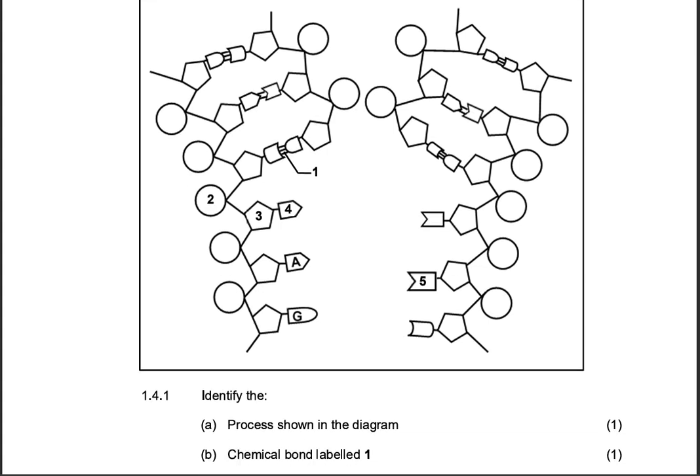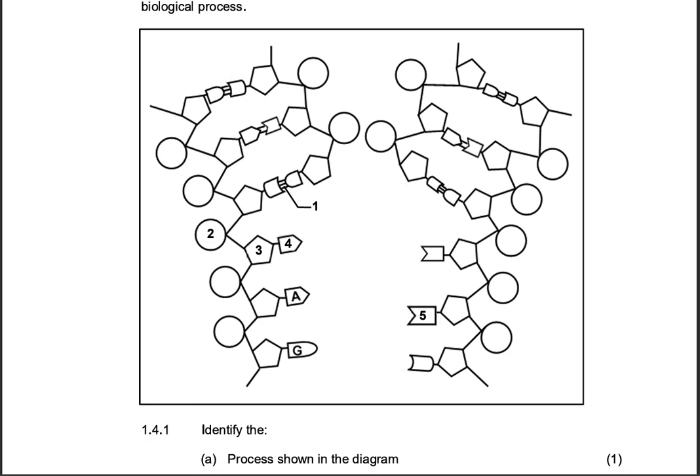You know the whole process, I think. Let me not waste time and explain the whole process. Let's just answer the question. 1.4.1, identify the process shown in the diagram. So you should be able to analyze the diagram itself and you should be able to see that this whole molecule is a DNA molecule that originally had two strands. So this was the first strand and this was the second strand.